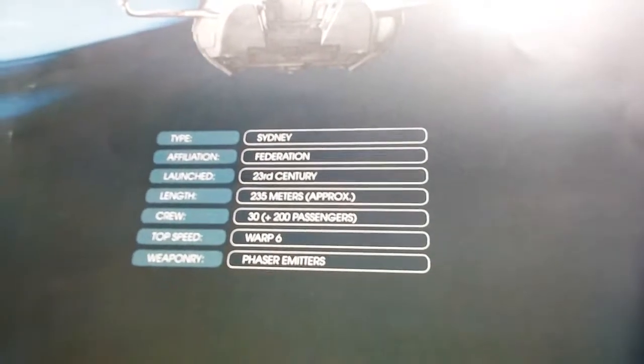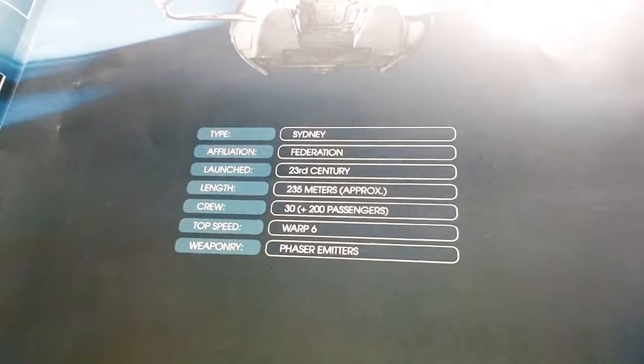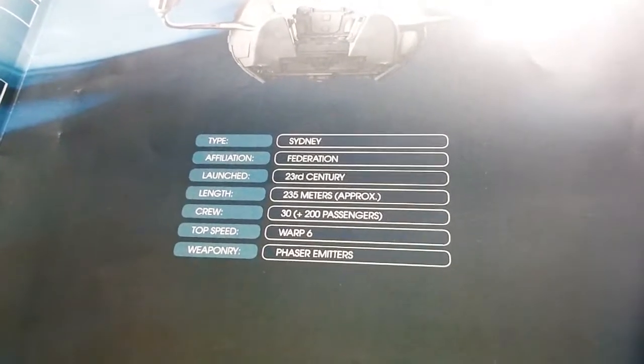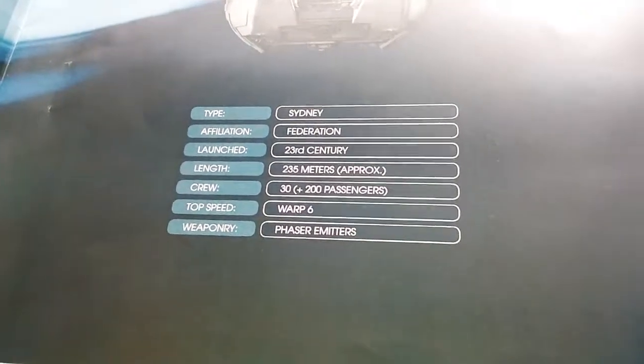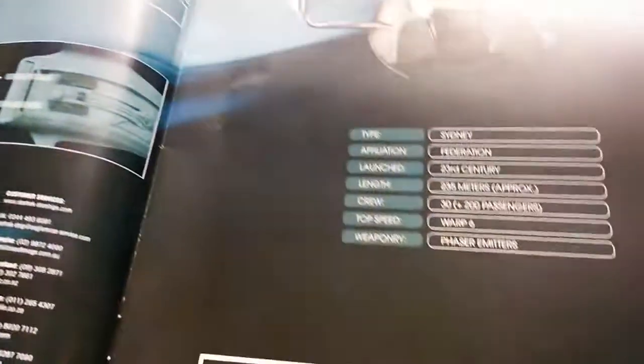Yep, as I was saying before, that's the Sydney Class Federation, 23rd century, it's 30 crew, 200 passengers. Wow, that's a lot more people that could fit in there than I thought. The phaser made it. Oh, oh, there were instructions. Oh.